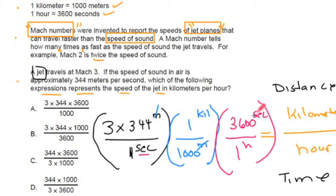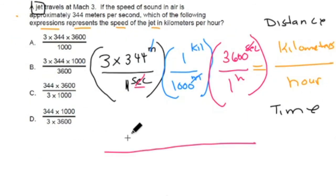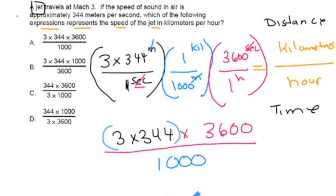You notice that the seconds cancel each other out. So let's rewrite this. On the top, we'd have 3 times 344 times 3,600. On the bottom, we would have 1,000. Now what does this mean? Well, walk it through with me. This part of the expression here gets us total meters per second. This part here gets us total kilometers per second. When we add this part in here, this gets us total kilometers per hour.